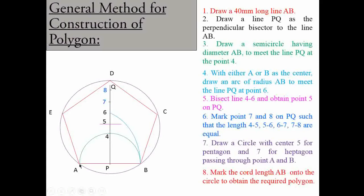To create a hexagonal or heptagonal structure, we simply use the 6th or 7th point as center with 6A or 7A as radius to draw the respective circle. All circles pass through points A and B. This general method allows creation of different polygonal structures in the same diagram — hexagonal, heptagonal, and octagonal. I hope all of you understood the procedure. Thank you so much.